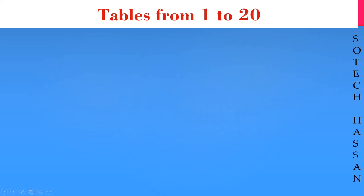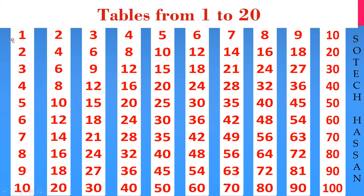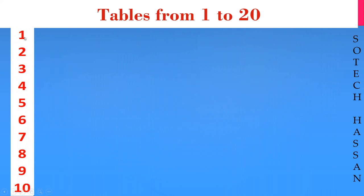Tables from 1 to 20. First table: 1 1s are 1, 1 2s are 2, 1 3s are 3, 1 4s are 4, 1 5s are 5.